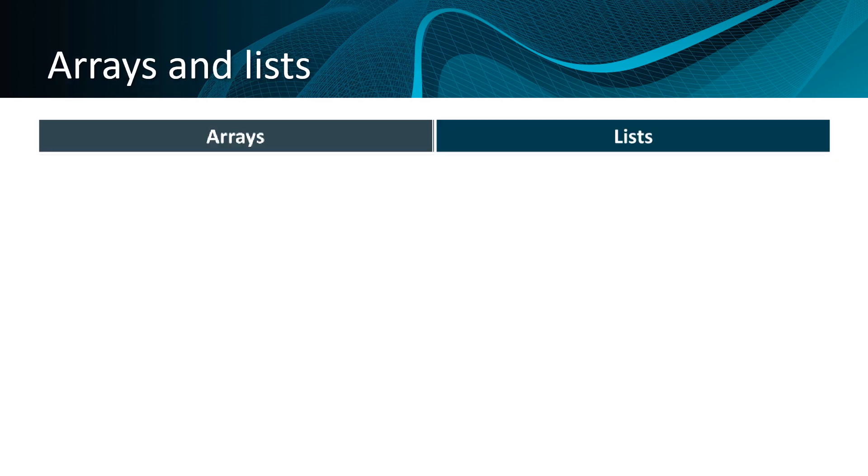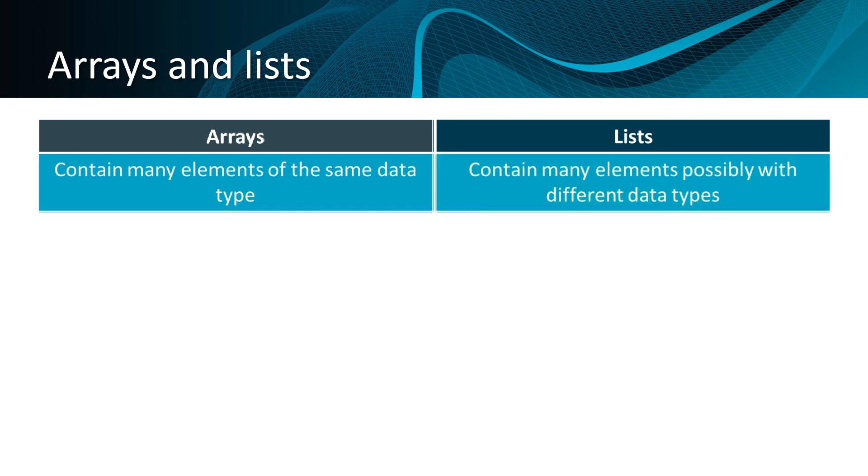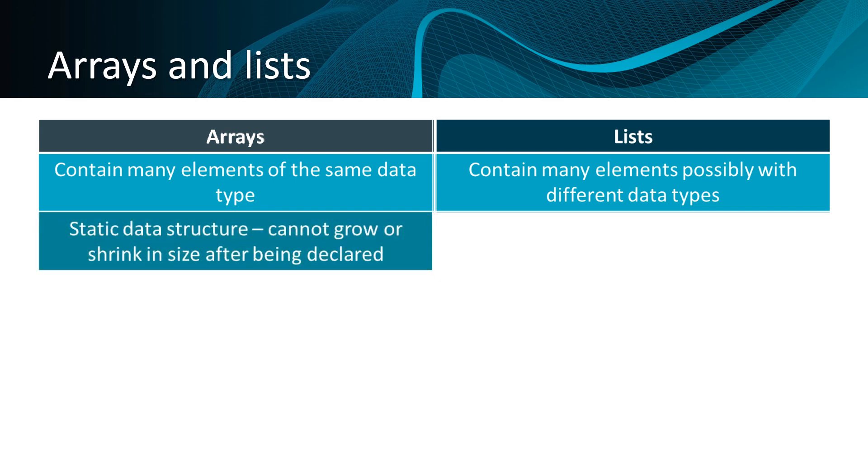Both arrays and lists give us a way to store multiple pieces of data under a single identifier. However, there are some important differences that you must be aware of. Arrays contain many elements, but they must all be of the same data type. For a list, they can contain many elements, and these may possibly have different data types. Arrays are static data structures. This means they can't grow or shrink in size after being declared, so you have to know how big you want the array to be before you actually declare it.